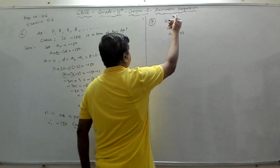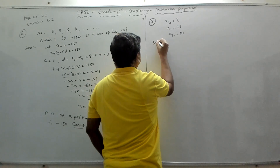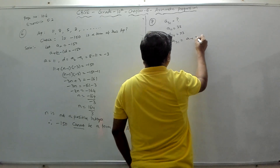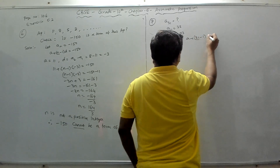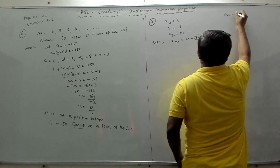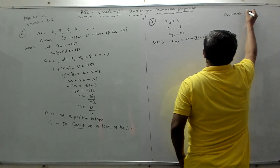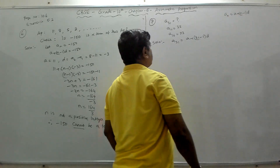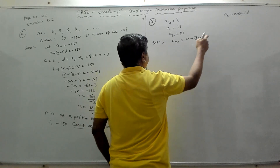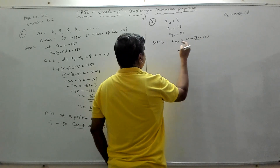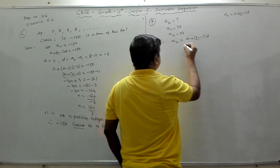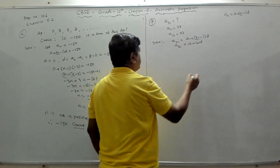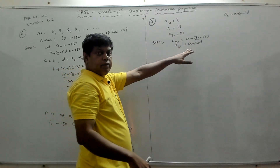Using the formula: a31 = a + (31−1) × d = a + 30d. To find a31, we need to know a and d. We need two equations — one from a11 = 38 and one from a16 = 73.